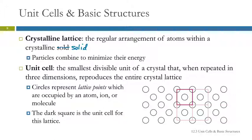The particles in the crystal are going to arrange themselves to minimize their energy. We've got this enormous lattice, and the way we look at this is we look at the smallest piece that is the repeating unit, and that's called the unit cell. The smallest repeating unit would be from the center of this sphere to the center of that one. If you take that and repeat it over and over again, you get the lattice.